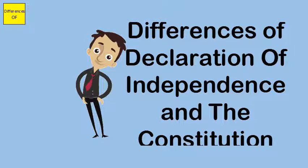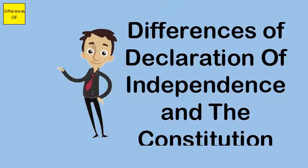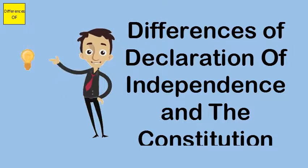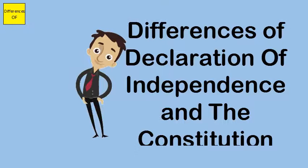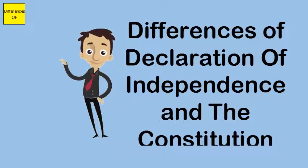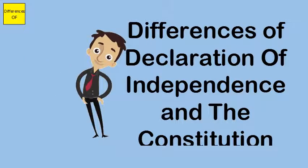Thomas Jefferson wrote the Declaration of Independence, and it was edited by the Continental Congress. The Congress unanimously adopted the Declaration of Independence on July 4, 1776.